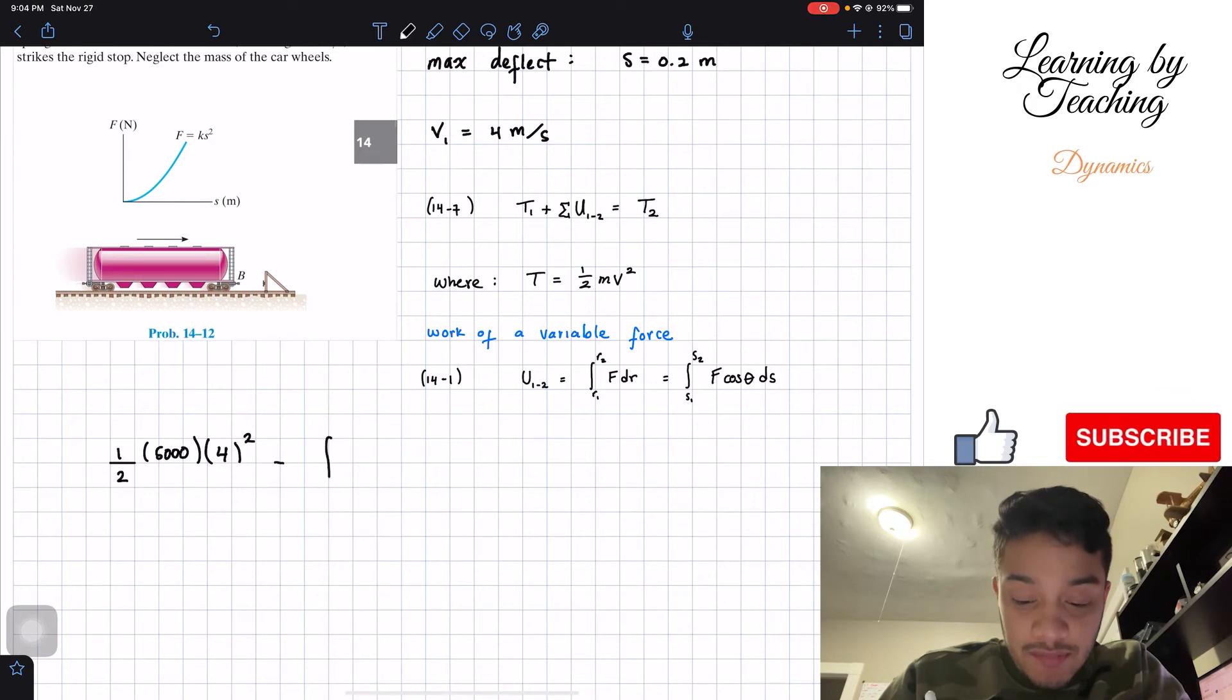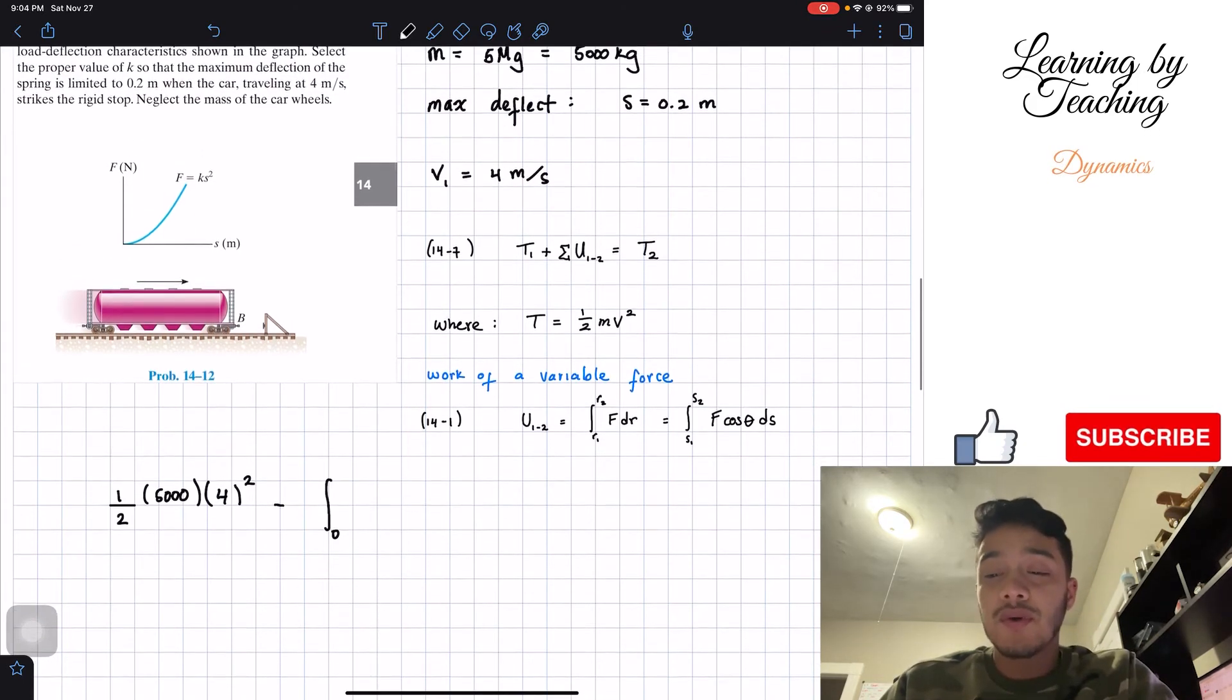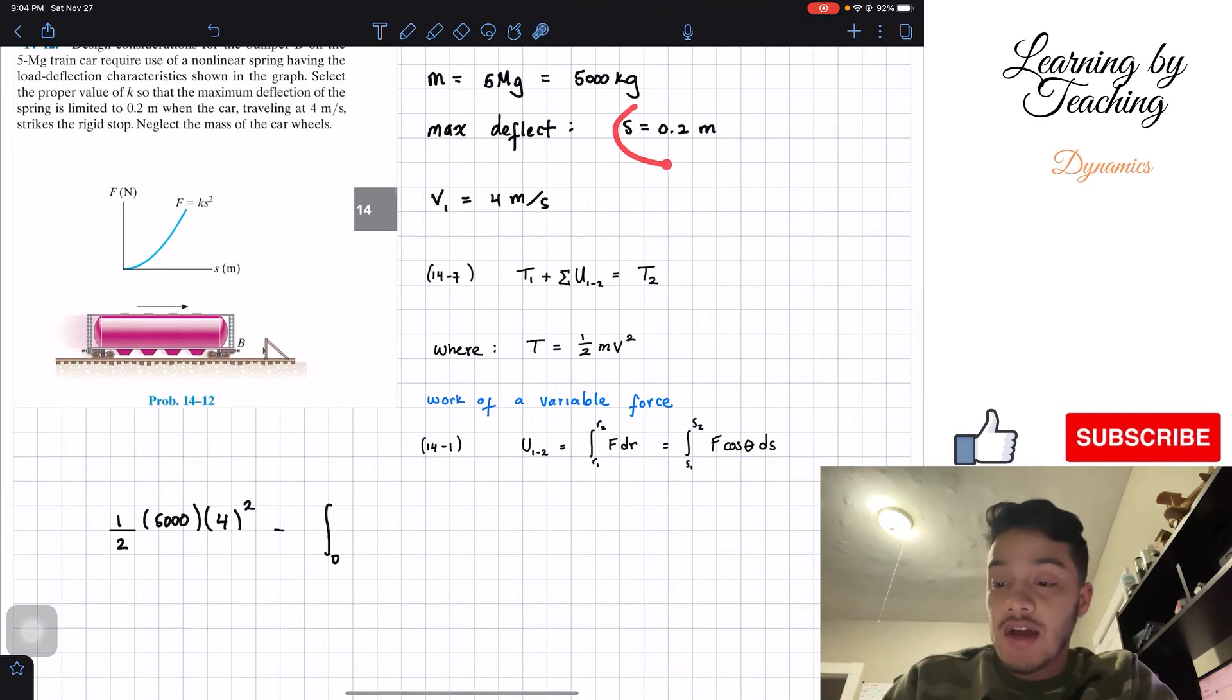Now the work is going to be the integral from zero deflection all the way to our maximum deflection which is our 0.2, so we got 0.2 meters.